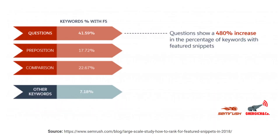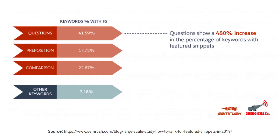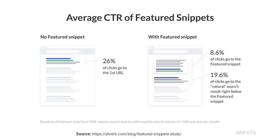Featured snippets are becoming so much more important now, as shown by this SEMrush study that analyzed over 80 million keywords — it found that a much larger percentage of queries are now triggering different snippet types. For questions, 41% are now triggering snippets. Prepositions and comparison-related searches are also returning a lot more snippets. In addition to that, featured snippets are taking up a lot more valuable real estate at the top of the search results page and getting a lot more impressions and clicks.